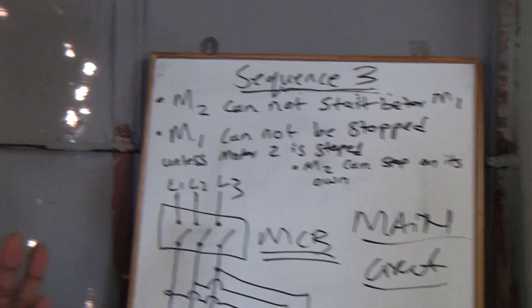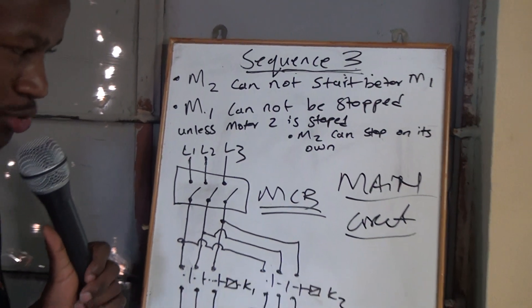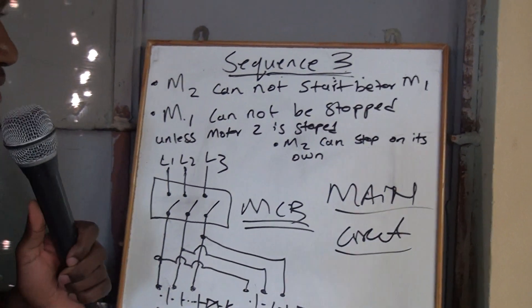Sequence 3, it's a little bit tricky, but it's not tricky. Always remember, it just needs you to understand the statement, and then you'll be able to draw. So this is what the statement is saying.